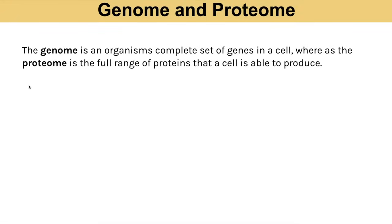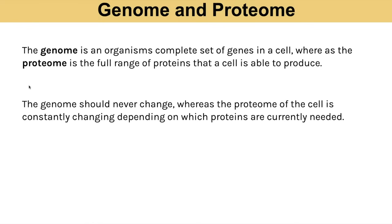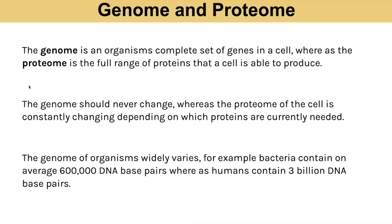A genome is an organism's complete set of genes in a cell, whereas the proteome is the full range of proteins that a cell is able to produce. The genome should never change unless there are mutations, whereas the proteome of a cell can constantly change depending on which proteins are needed in a specialised cell — because some genes will have been switched off or on, and that's what makes it specialised. The genome of an organism will really differ between different species: bacteria contain on average 600,000 DNA base pairs, whereas humans have 3 billion DNA base pairs.